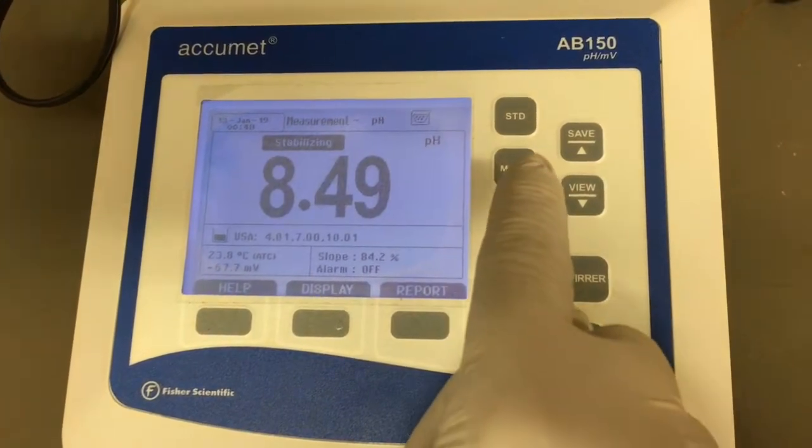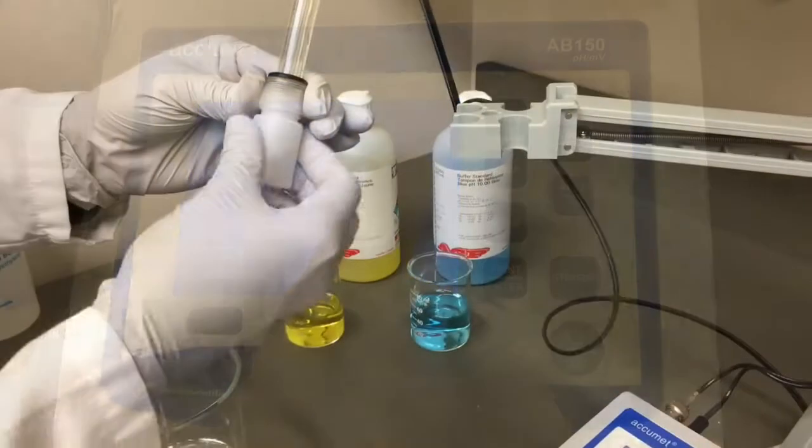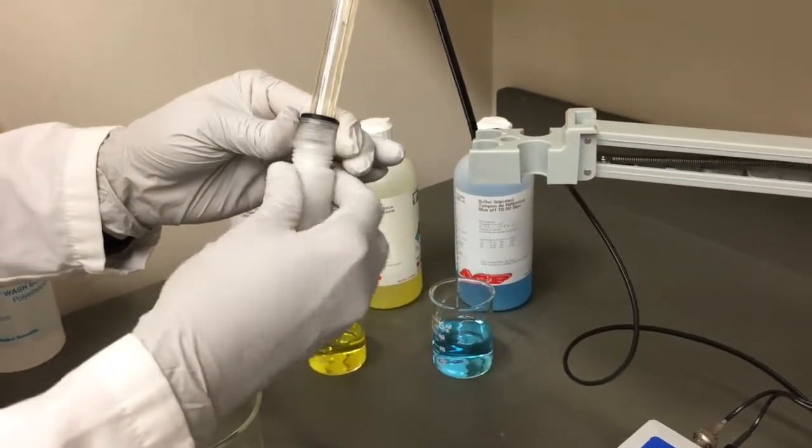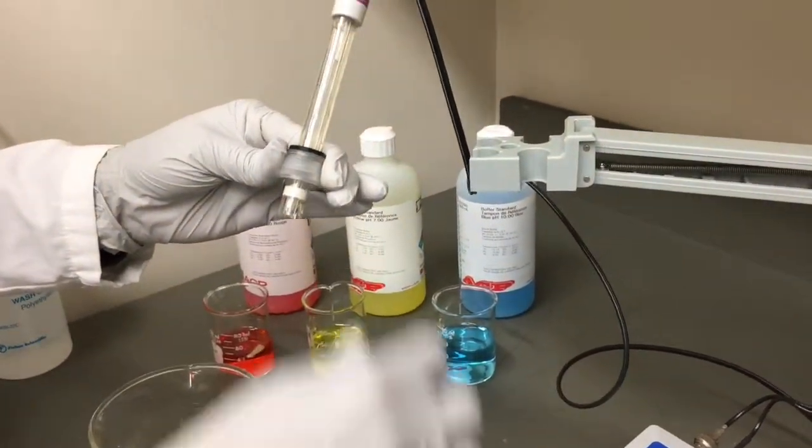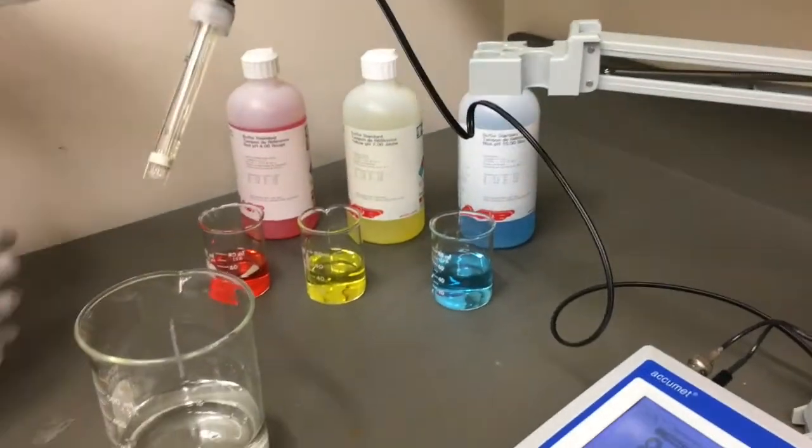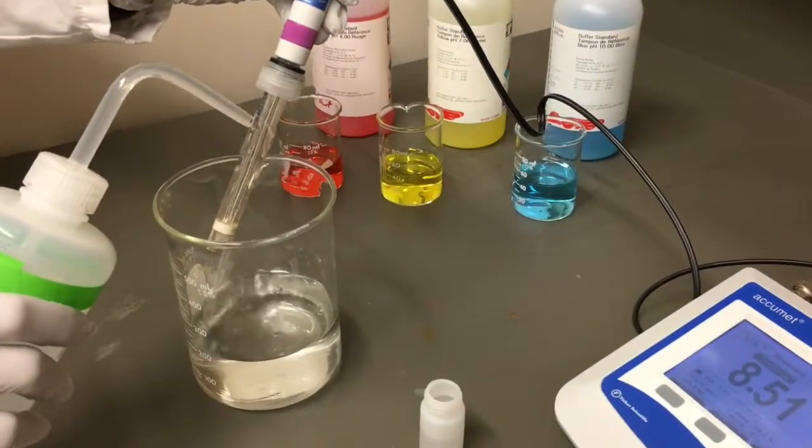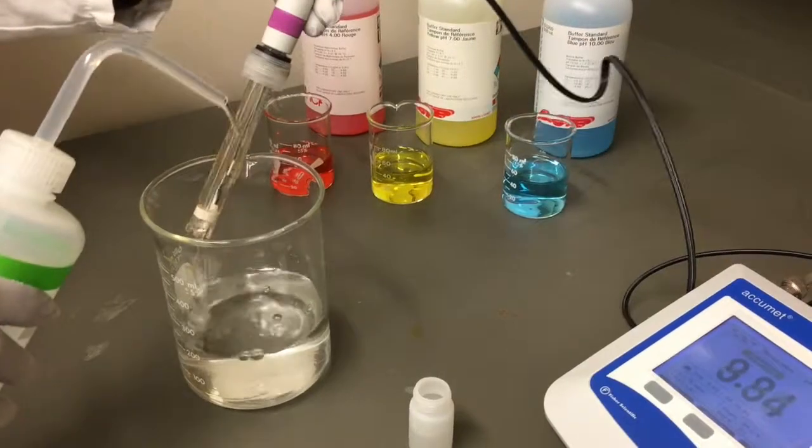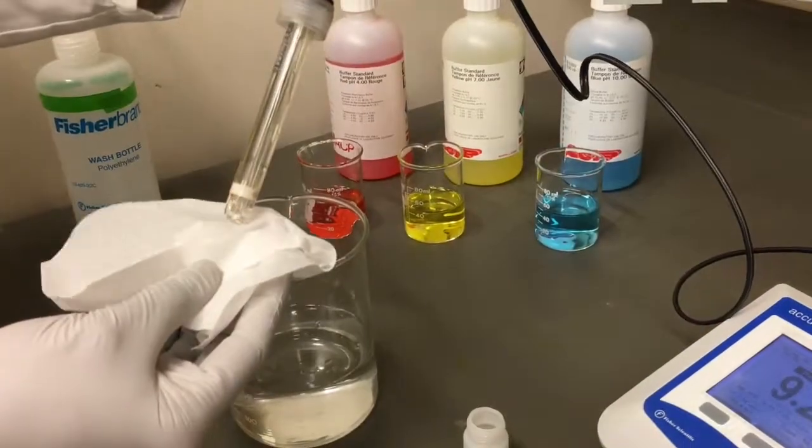Confirm the mode is set to read pH. Remove the storage container from the probe and carefully move the lid portion to the upper region of the probe so it does not contact your solution. Rinse well with clean distilled water and remove excess water by gently touching the tip with a kim wipe. Do not wipe the probe as this can cause damage.